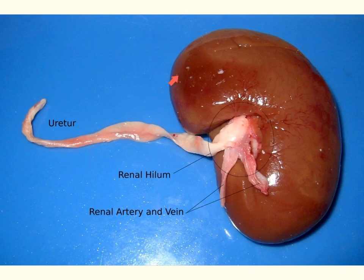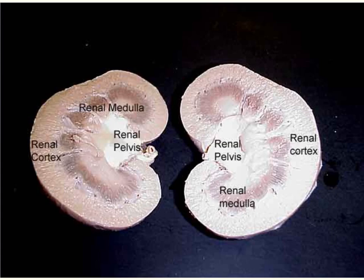The renal capsule adheres tightly to the outer surface of the kidney. The next component is the renal cortex area, which is the region just below the capsule. This area is highly vascularized.